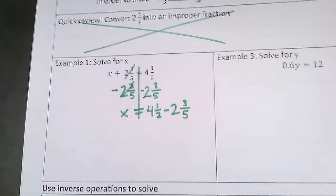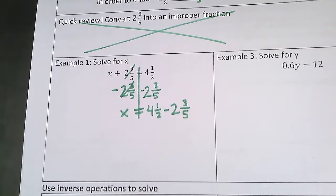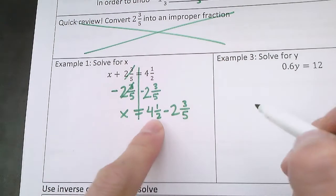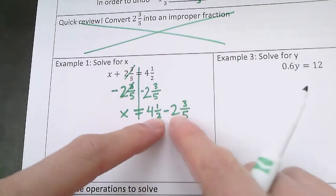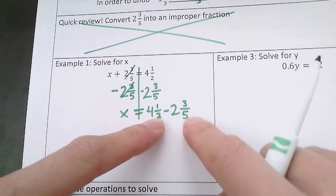And if you remember, any time that we're adding or subtracting fractions we always want a common denominator. So I check out my two denominators in the mixed numbers: 4 and 1 half, the denominator is 2; 2 and 3 fifths, the denominator is 5.